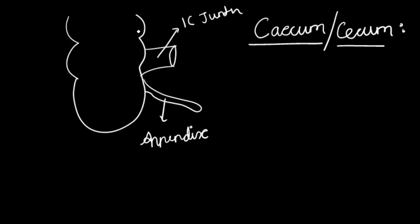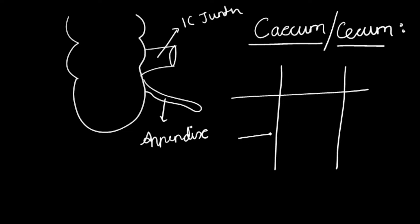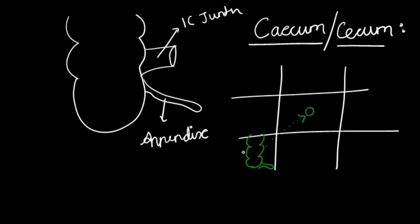The cecum is mainly present in the right iliac fossa. We had already discussed the nine quadrants of the abdomen. Whenever we study appendicitis, pain occurs in the right iliac fossa and is referred to the umbilicus because of the same dermatomal origin.